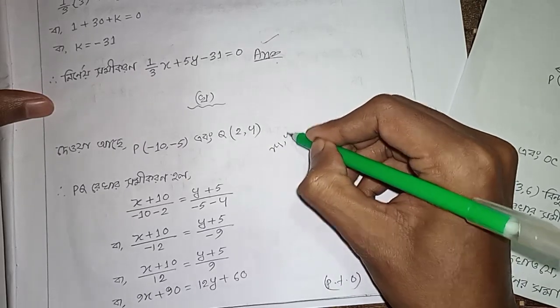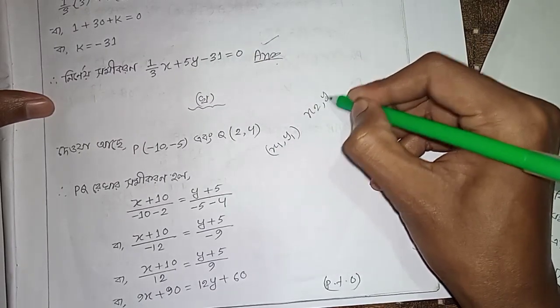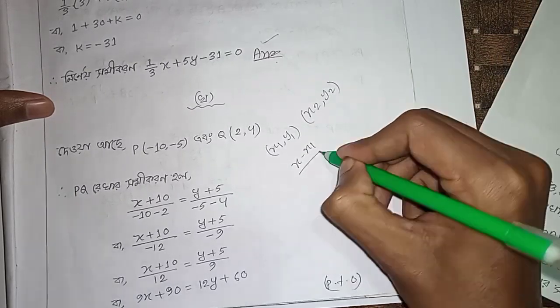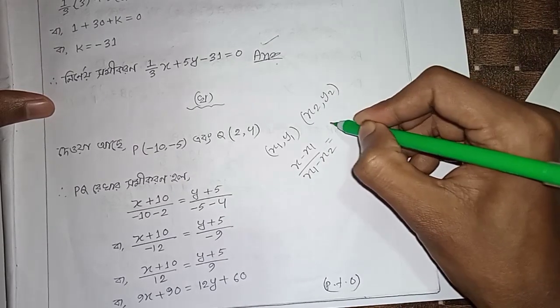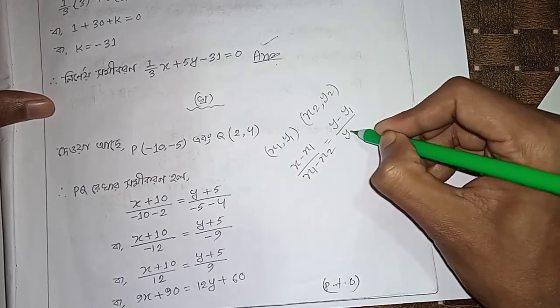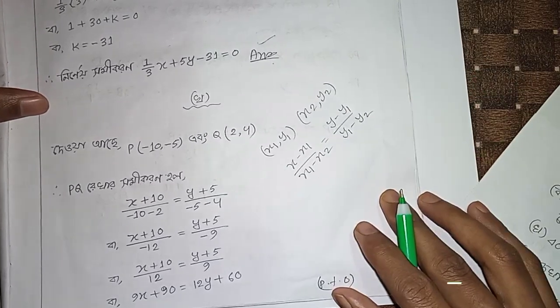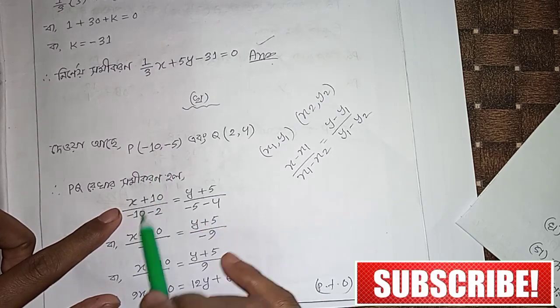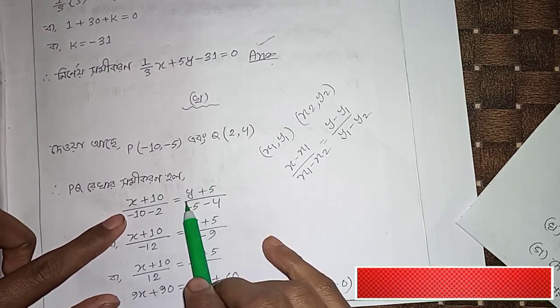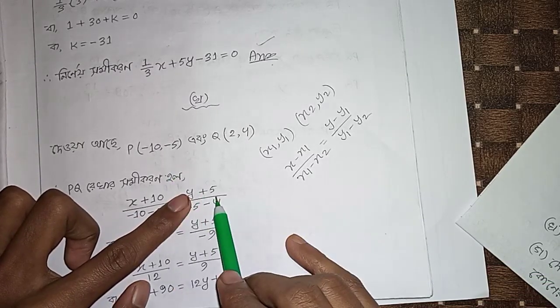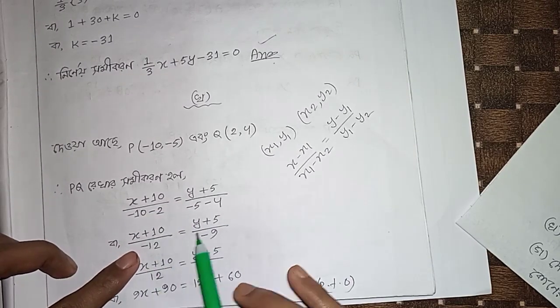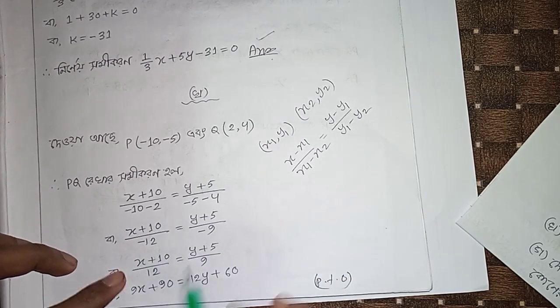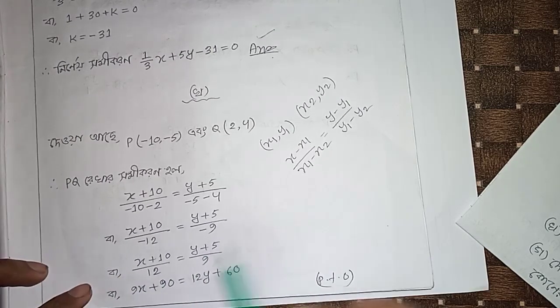x1, y1, x2, y2. Two-bit y1, y1 minus y2, x minus x1 by x1 minus x2, y minus y1 by y1 minus y2. x plus x1 by x1 minus x2 minus 2 plus y minus plus y1 by y1 minus y2. x plus 10 by minus 12 equal to y plus 5 by minus 9. x plus 10 by y2 minus minus 32, x plus 10 by 12y plus 9 by y plus 5 by 9.